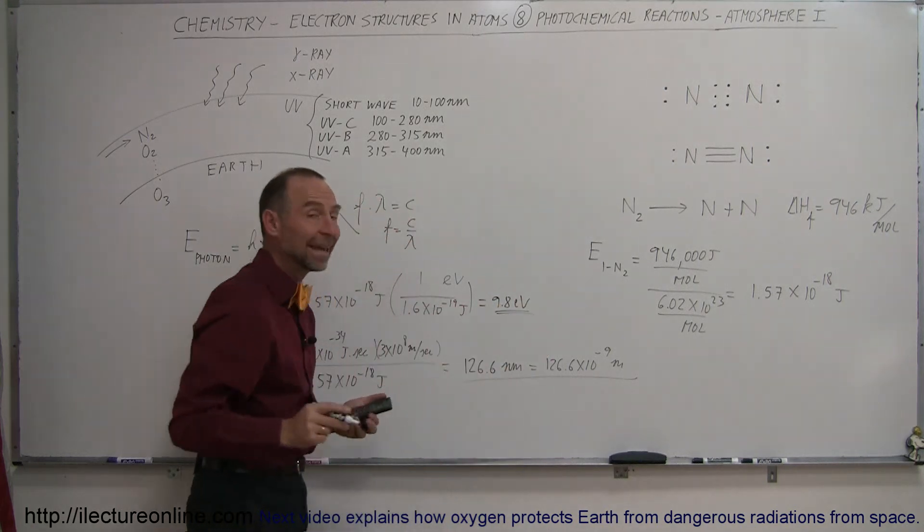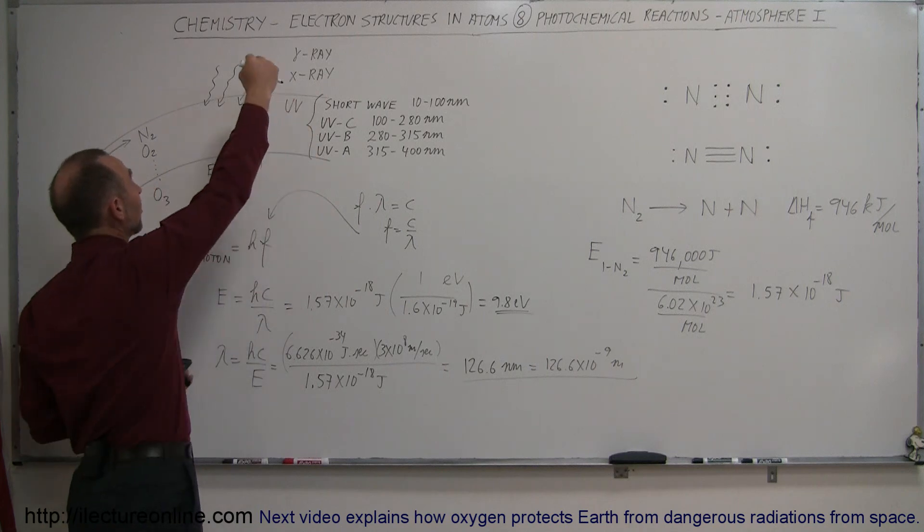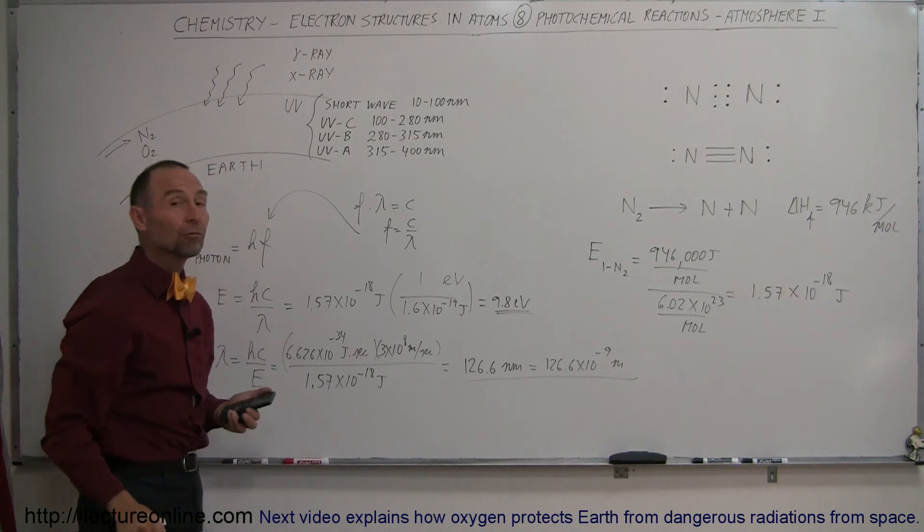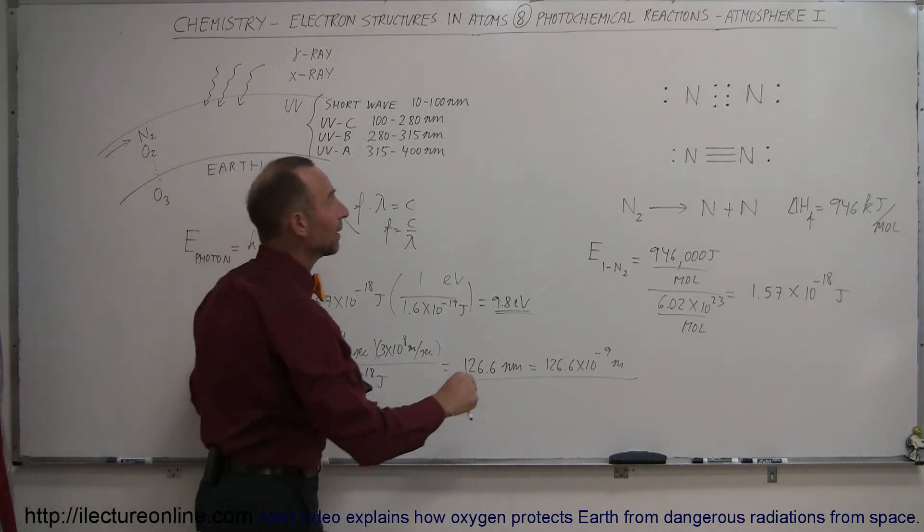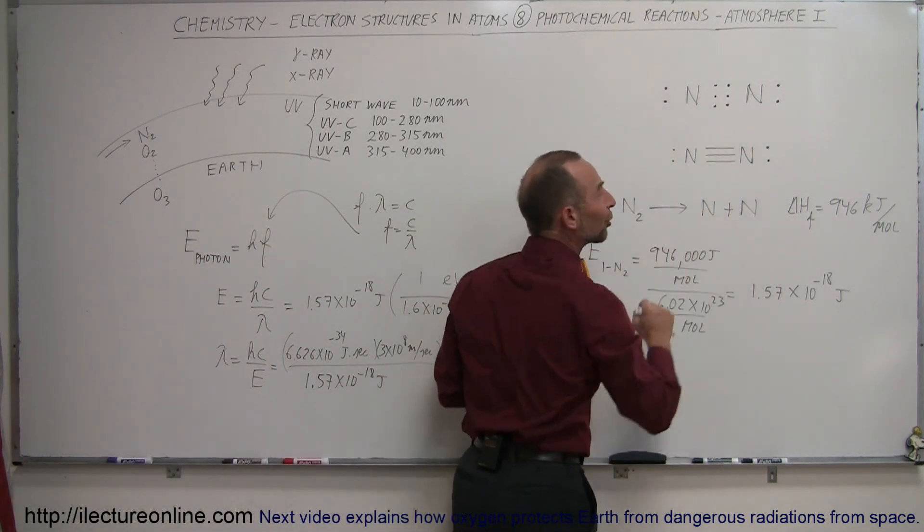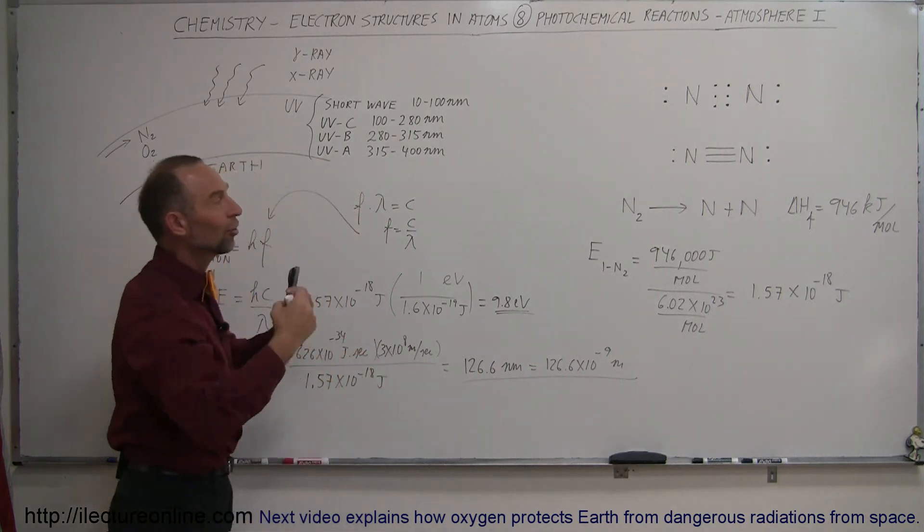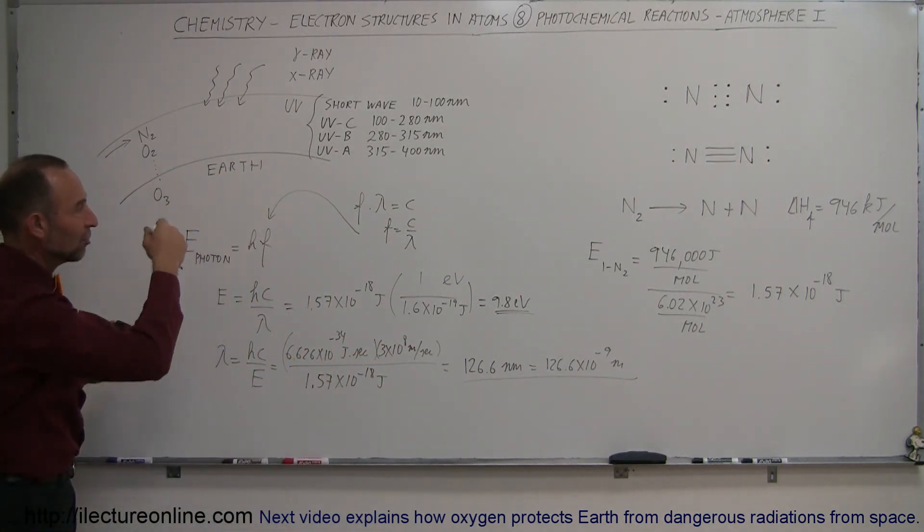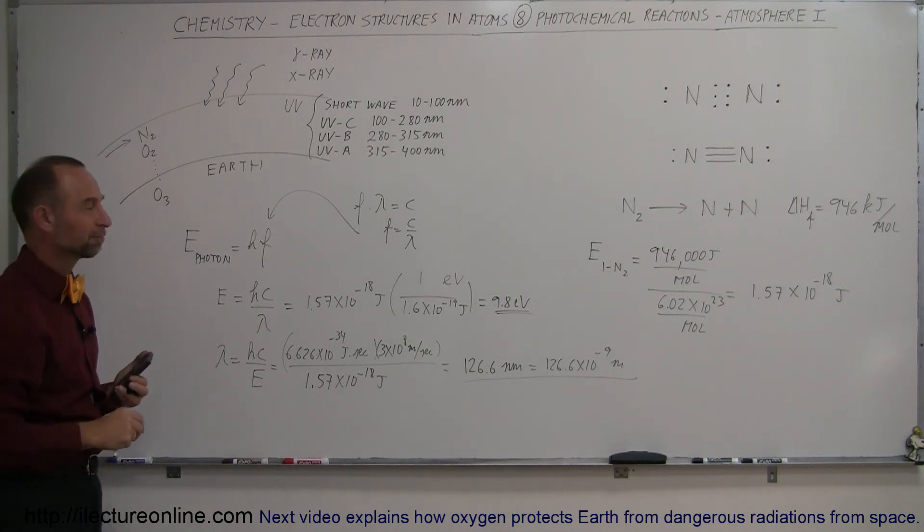Another way of looking at it is any photon coming in from space into Earth's atmosphere that has an energy greater than 9.8 electron volts will be absorbed by this wonderful nitrogen molecule that will take that energy, dissociate itself into two nitrogen atoms, and thus protect us from the dangerous rays of the universe. There's a very nice example of photochemical reaction.